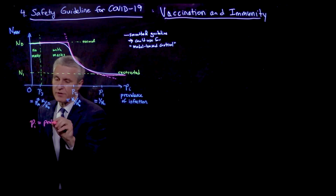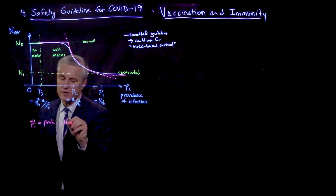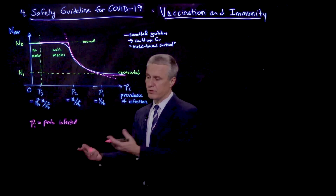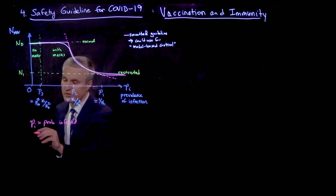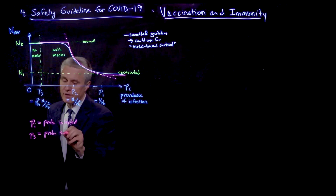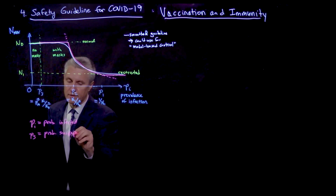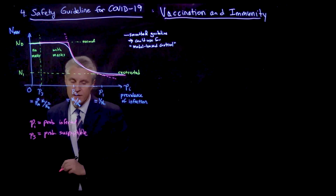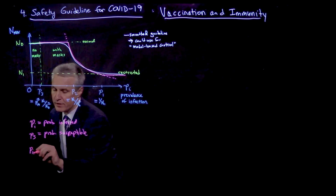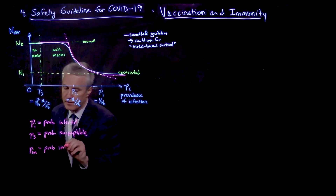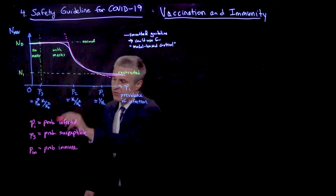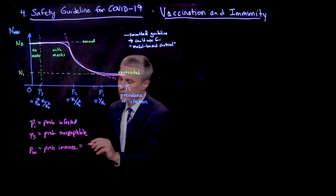PI is the probability that a person is infected — meaning they're infectious and can affect other people — drawn from the local population entering that indoor space. We add PS, the probability that a person is susceptible. The third category is PM, the probability that a person is immune. These three categories must add up to one, so PM equals one minus PI minus PS.